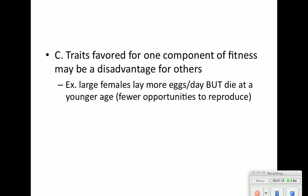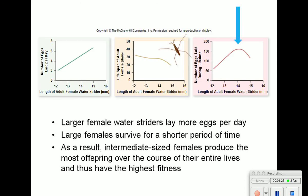There is a disadvantage though. For our large females, if they're laying more eggs, they'll probably die at a younger age because there are fewer opportunities to reproduce and they've expended energy in those eggs. With water striders, larger female striders lay more eggs per day but survive for a shorter period of time. As a result, intermediate-sized water striders produce the optimal number of offspring and have the higher fitness.